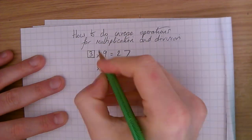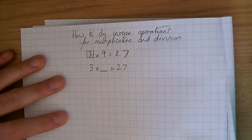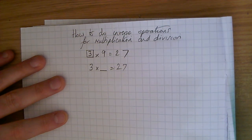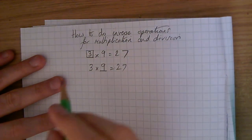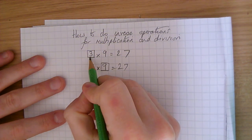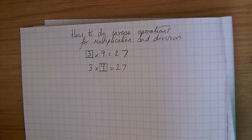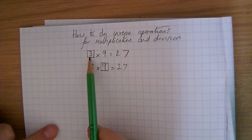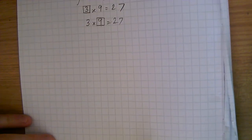Let's say the question was the other way round: 3 times what is 27? It's exactly the same method — 27 divided by 3 is 9. So whether the number we don't know is first or second in the number sentence, for multiplication we're still going to do the inverse — we're going to do division. That's because it doesn't matter which way round the numbers are, 3 or 9 first, you're going to get the answer 27.